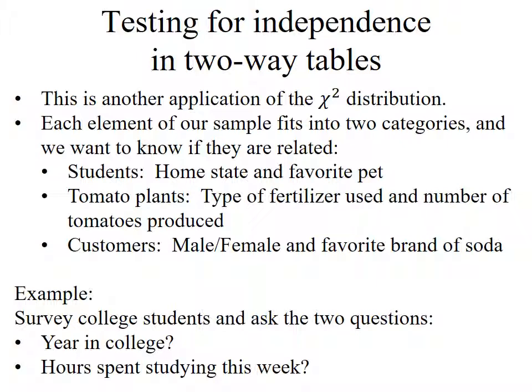Here's another example. Suppose I'm studying tomato plants and I try out several different types of fertilizer — maybe three different types — on a whole bunch of different plants, and for each plant I count the number of tomatoes produced. Or I survey restaurant customers, categorize each person as male or female, and ask their favorite brand of soda. Then I can study whether males prefer certain brands compared to females, organize this into a two-way table, and use the chi-squared distribution to figure out whether there's a relationship.